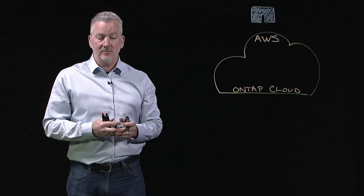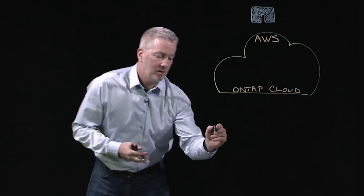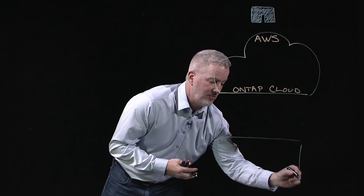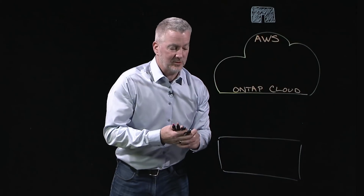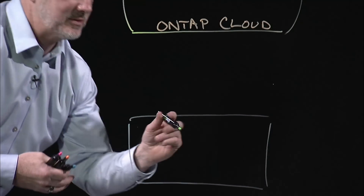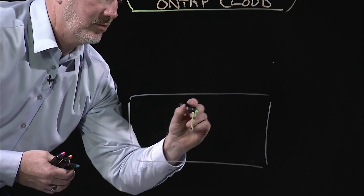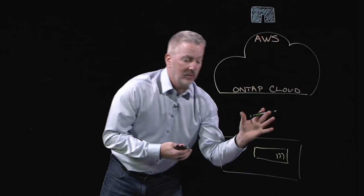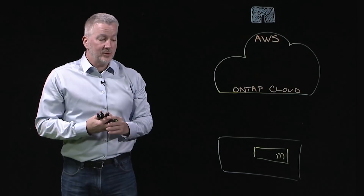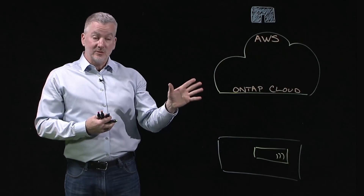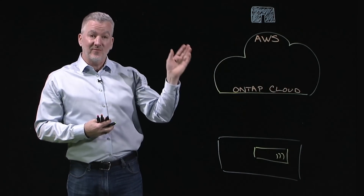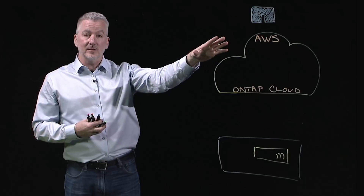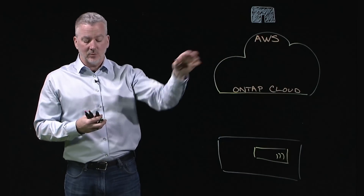What is ONTAP Cloud? ONTAP Cloud is the same enterprise data management software that customers have been using on-premises for over 25 years. This is really where you can use the same processes and procedures, the same features and capabilities, now natively in Amazon Web Services.